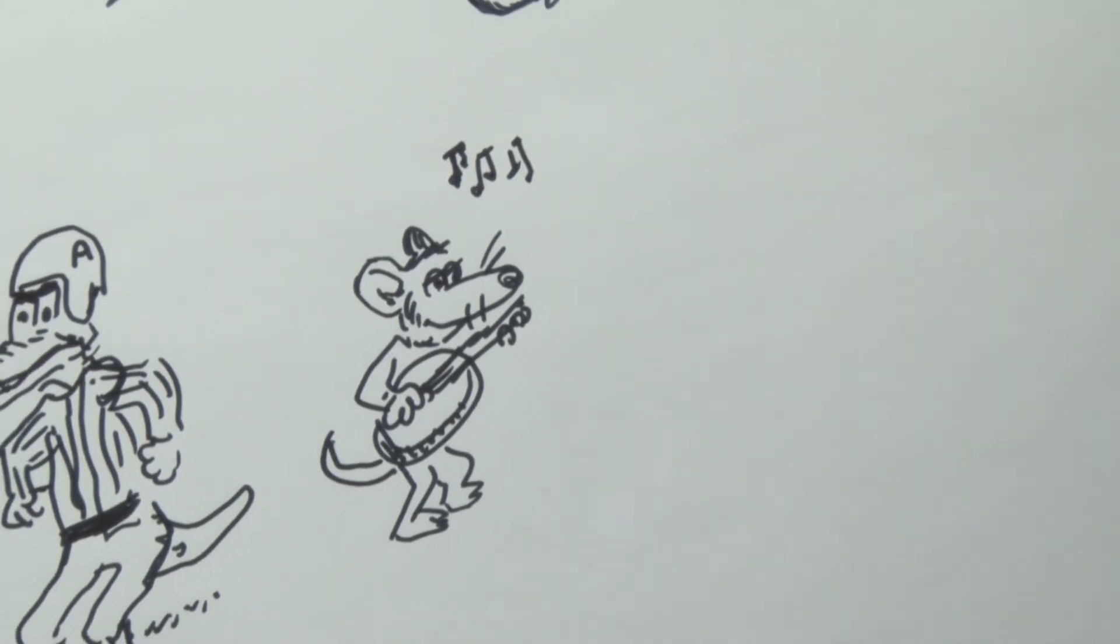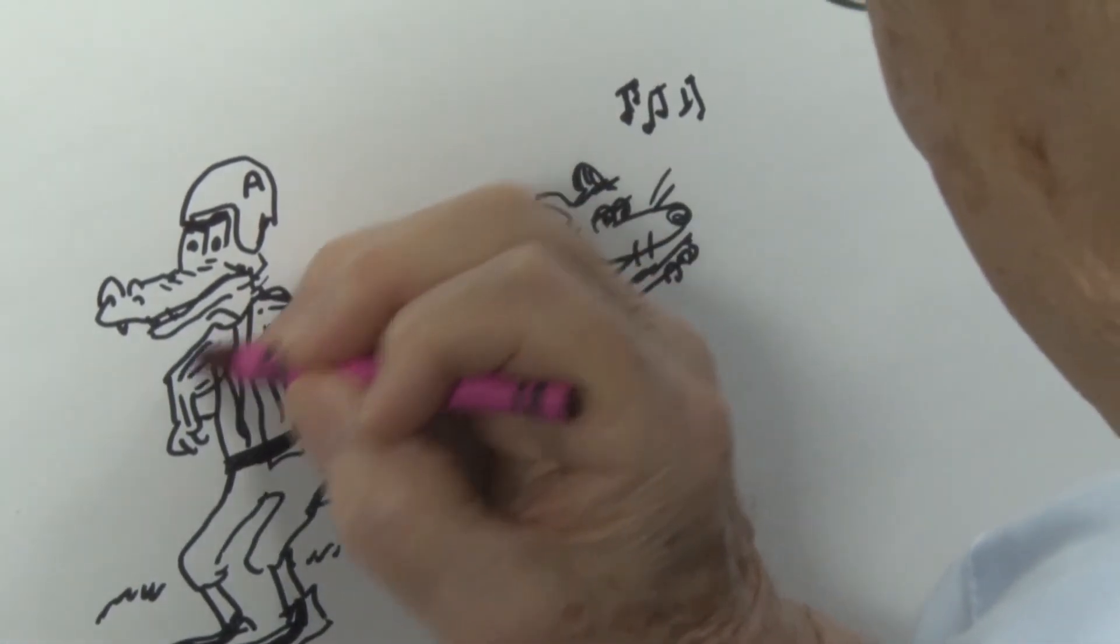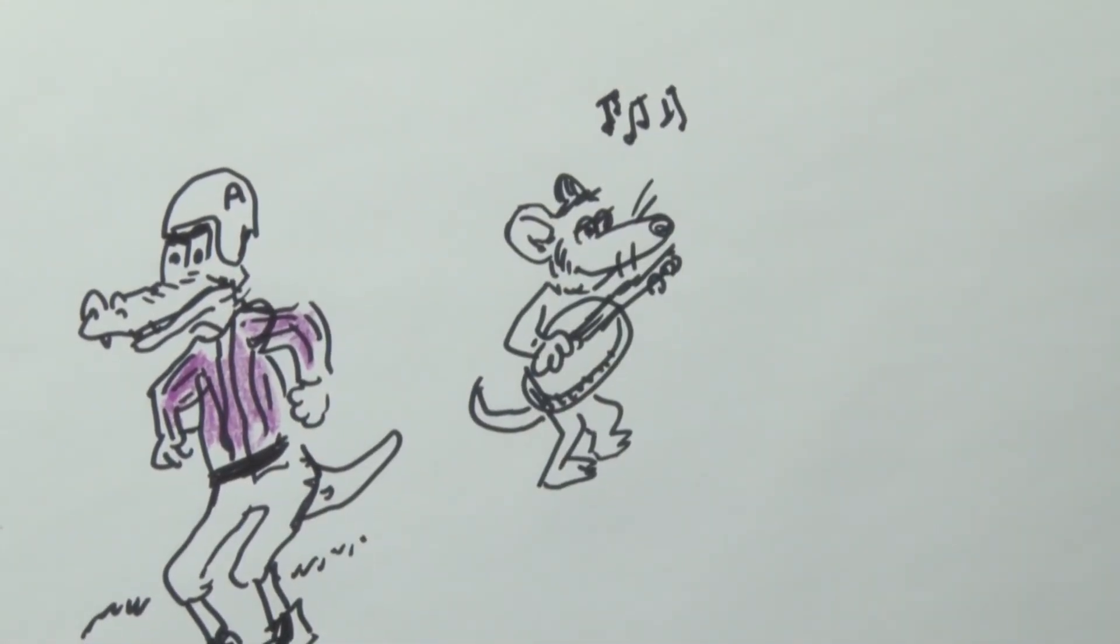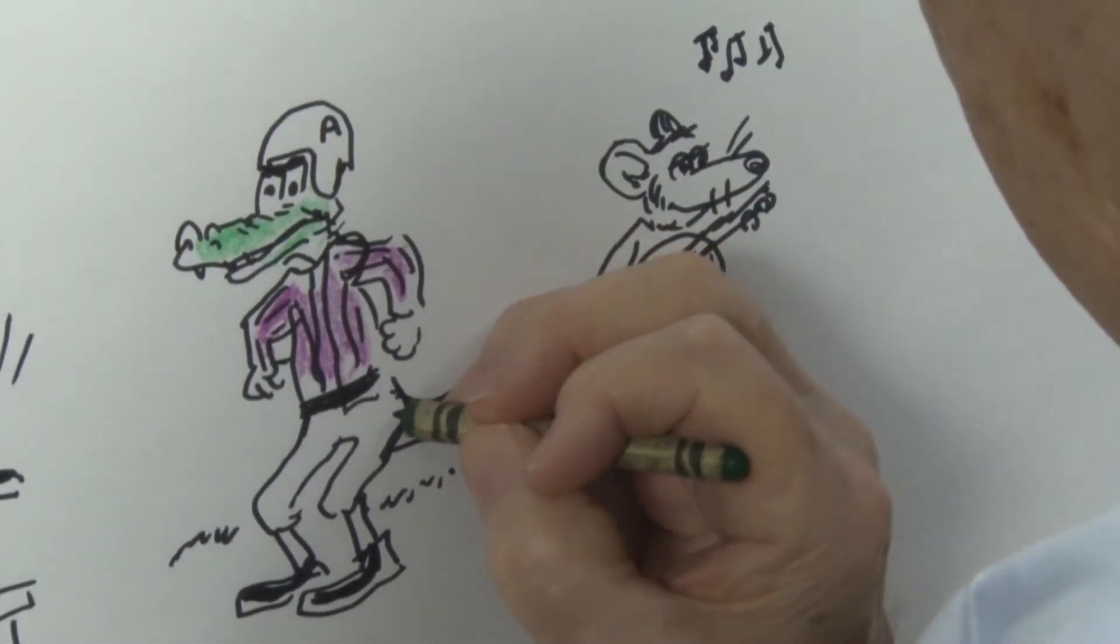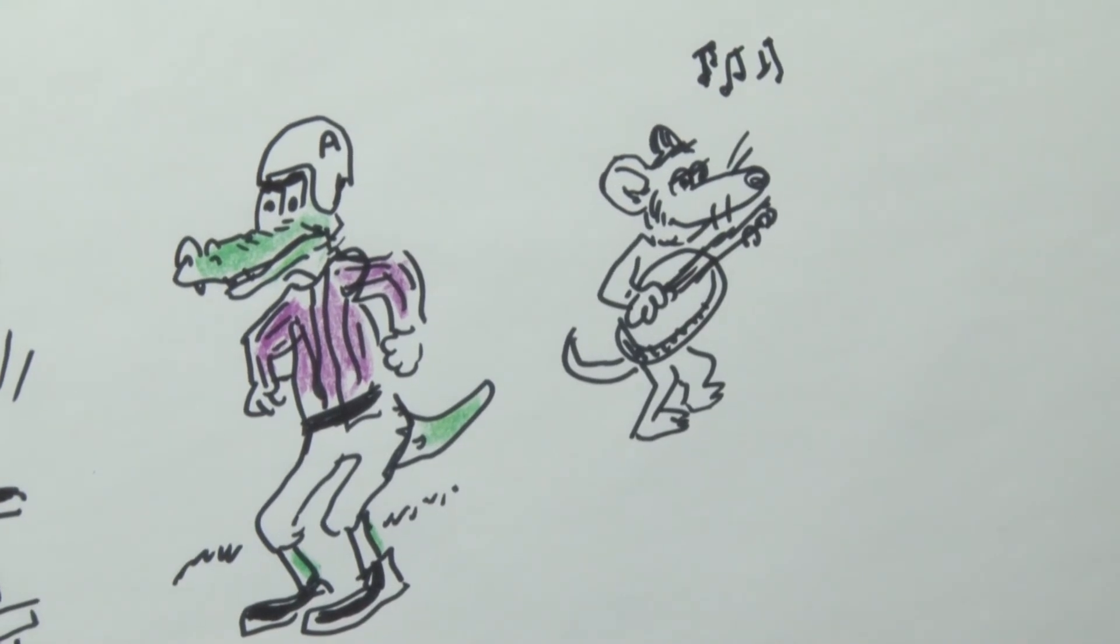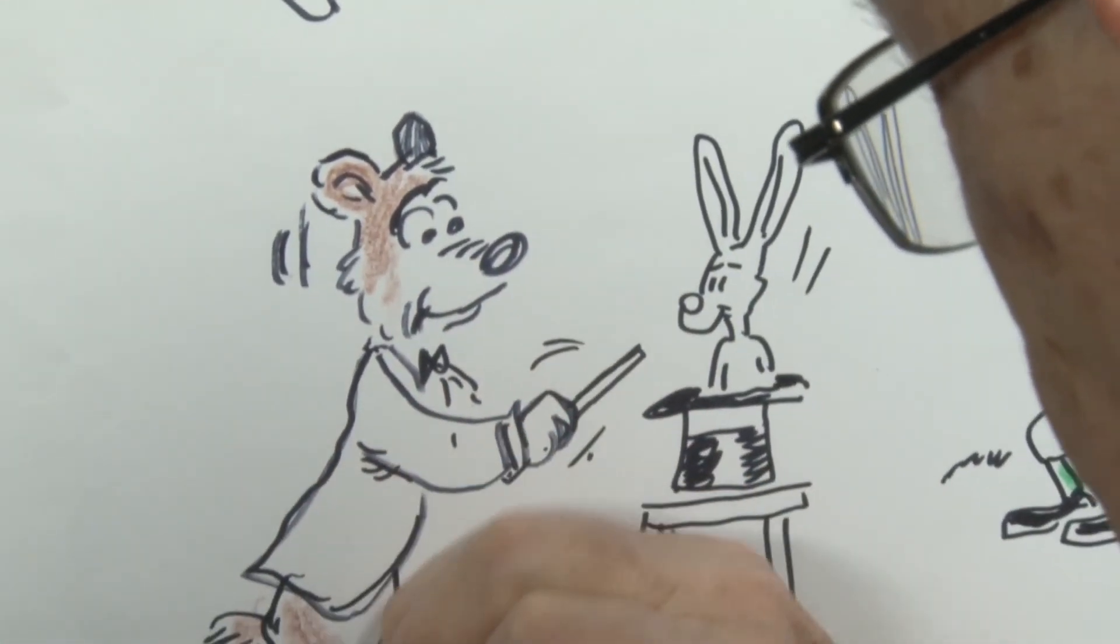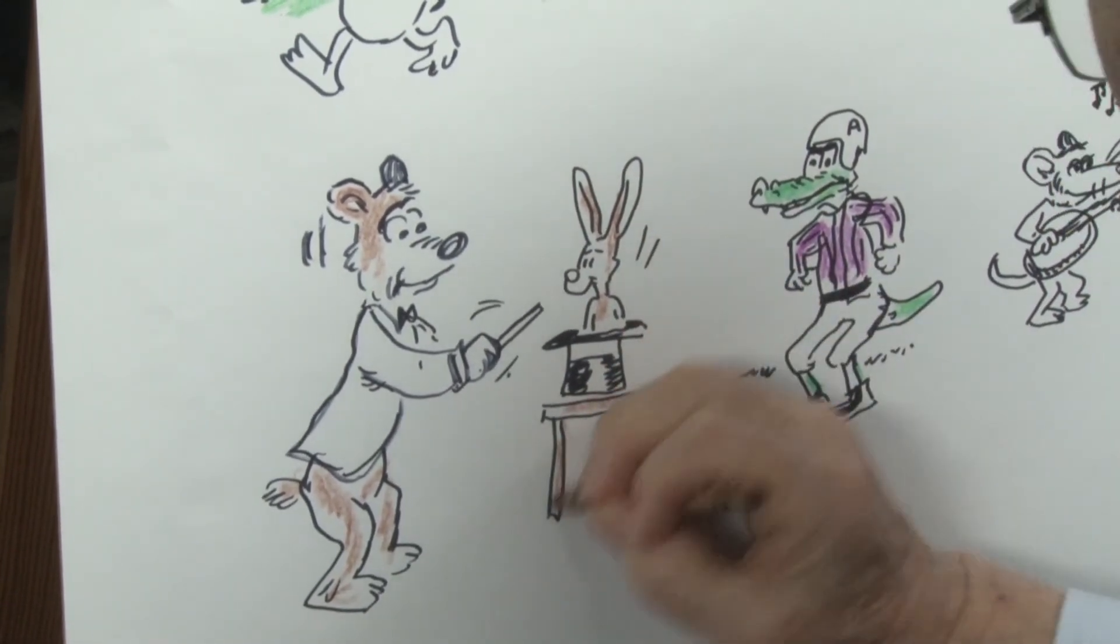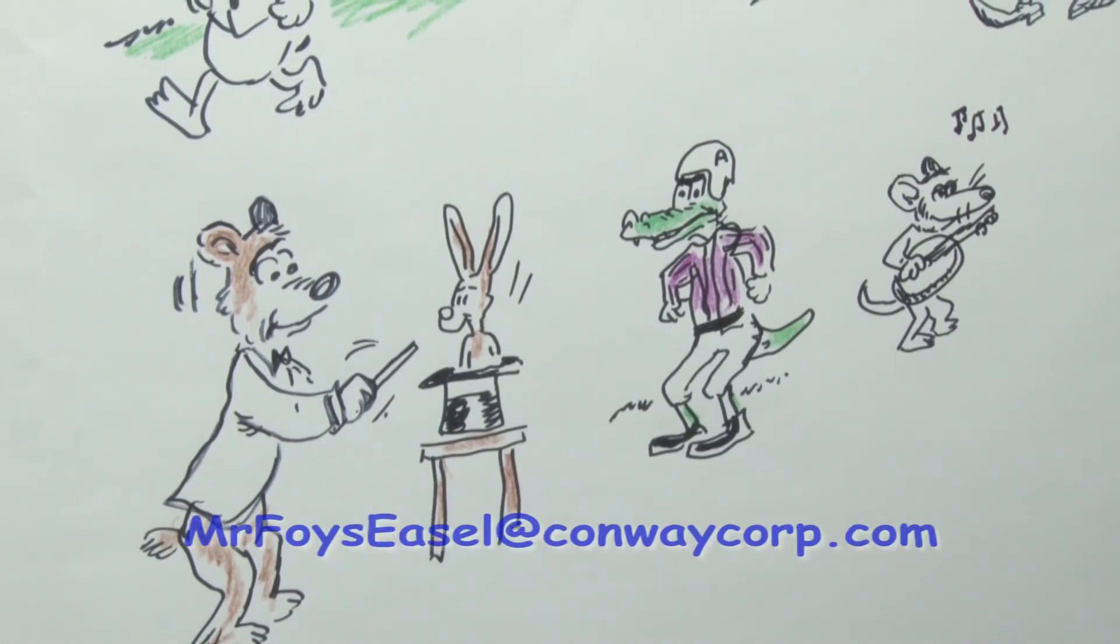Now, let's put color on these dudes. Color up this gator. Got to find my green color for this guy. And this is a brown bear with the rabbit coming out of his hat. Well, they make him a brown rabbit while I've got the color in my hand. I haven't time to color up our friend the rat because we've run out of time. And I'll see you next time on Mr. Foiseasel.